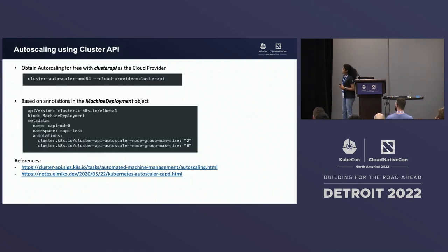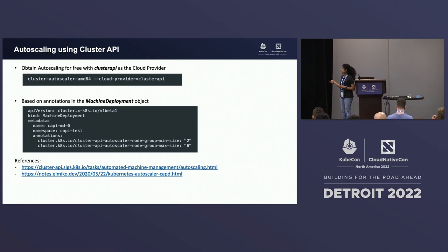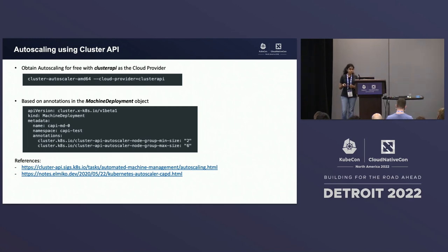Auto-scaling comes essentially for free with Cluster API. All you have to do is download the autoscaler and run the command with Cluster API as the cloud provider and set some annotations on the machine deployment object. There are more references available and your clusters become auto-scalable. With that, I'll hand it over to Arun.